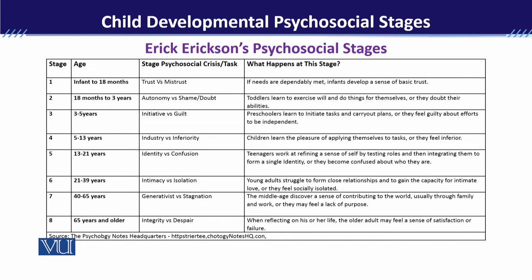The first stage is infant to 18 months — that is Trust versus Mistrust. According to Erikson, the need of trust is key here. If the parents are available when the child needs them, the child's sense of trust will be built. Otherwise, if there is inconsistency — if parents are not reliably available — then mistrust develops in the child.